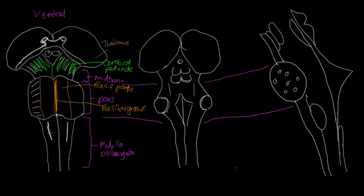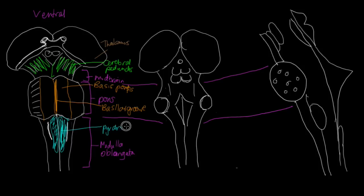Various cranial nerves come off the brainstem at particular locations, but we're not going to go into that today. On the medulla, we've got other distinguishing features. The corticospinal tracts descend in a particular region known as the pyramids. Lateral to the pyramids, we've got structures that look a bit like olives, so with the originality that anatomists have, they were called olives. They contain the inferior olivary nuclei that are important in learning new movements.